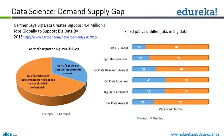There is a large demand and supply gap for data scientists. A Gartner survey says there are 4.4 million IT jobs globally to support big data by 2015, and only one third of those requirements are currently being met. As a result, many programs are coming up to develop data science skills, which are more complex than what you'd typically learn in a bachelor's degree.